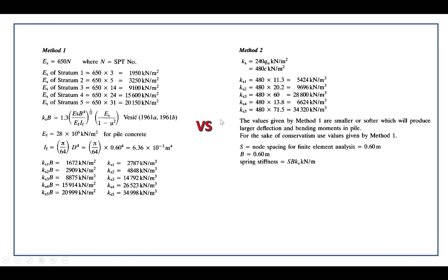For Method 2, you estimate Ks1 equals 240 multiplied by qu, which can be simplified to 480 multiplied by c, where c is the cohesion of the soil. The cohesion for layer 1 is 11.3 kN per square meter. If you continue applying the formula from layer 1 to layer 5 you will get the corresponding results.